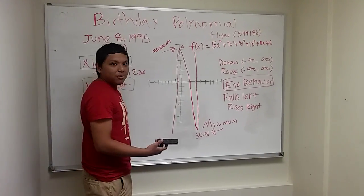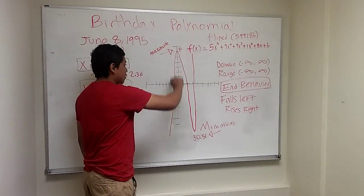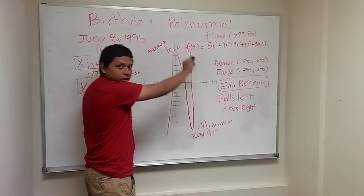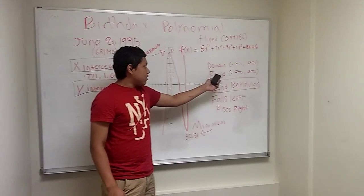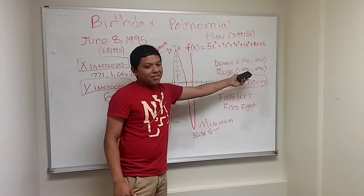I used the graphing calculator and I graphed it, and this is the shape of the equation. The domain is negative infinity to positive infinity. The range is negative infinity to positive infinity.